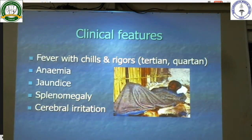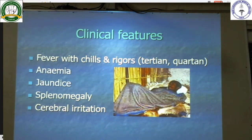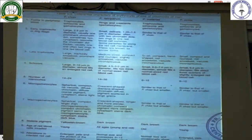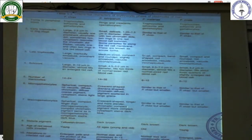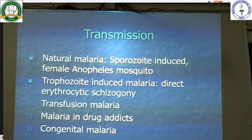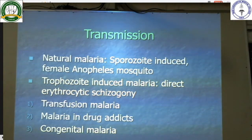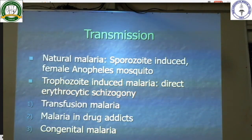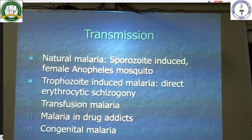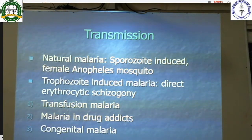Clinically, malaria presents with fever, chills and rigors, anemia, jaundice, splenomegaly, and cerebral irritation. Transmission of malaria occurs as trophozoite-induced malaria or natural malaria. Natural malaria is sporozoite-induced and occurs after a bite from a female Anopheles mosquito. Trophozoite-induced malaria is direct erythrocytic schizogony and is seen in transfusion malaria, malaria in drug addicts, and congenital malaria.